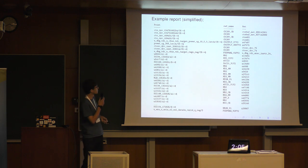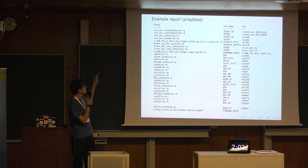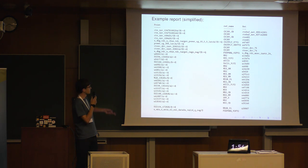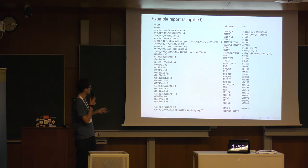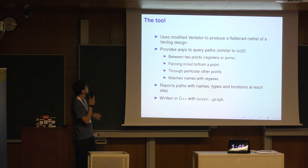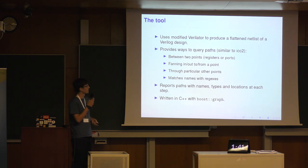Here's an example — this is taken from a real path, a bit simplified. You can see that you have some named points like a clock gen and start and end registers, but everything in the middle has automatically generated names. You can say something perhaps about the intervening logic from the names, but not much.